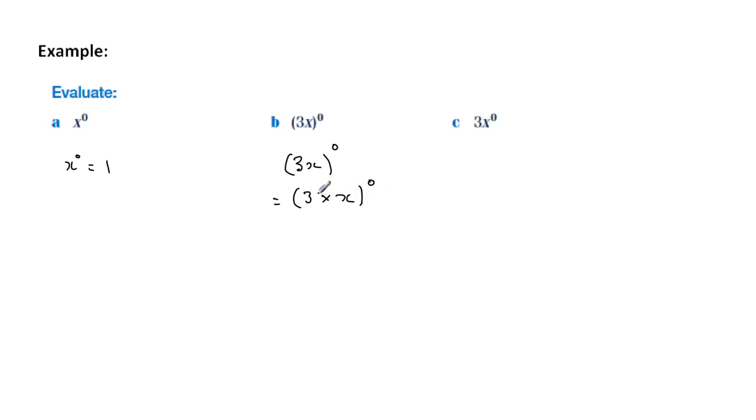And remember that every number has a power of one if it hasn't got another power indicated. So then what we do, our rule says to take the number outside and multiply it with the numbers inside. So we've got three to the one times zero, times now let's look at this x here, one times zero.